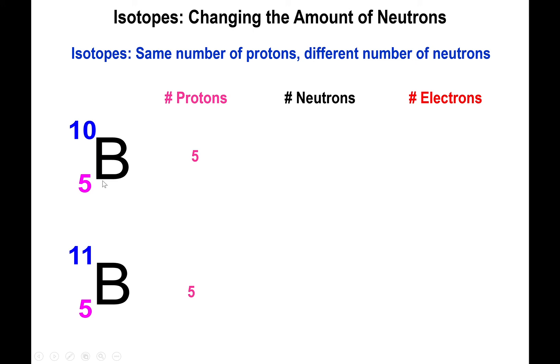The number of neutrons, however, is where the story changes. 10 minus 5 will tell you that you have five neutrons. And 11 minus 5 will tell you that you have six neutrons on the heavier version of the element. Now, since they're both neutral, this tells you that you have the same number of electrons as you do have protons, five in each case.